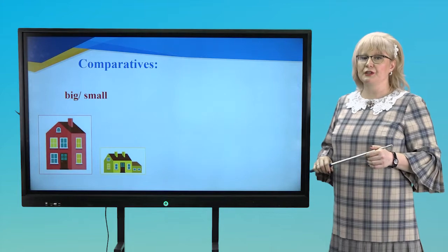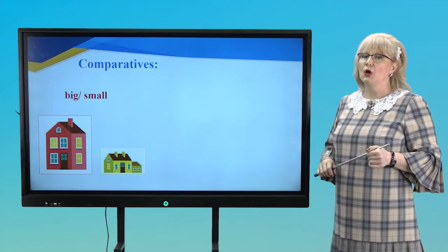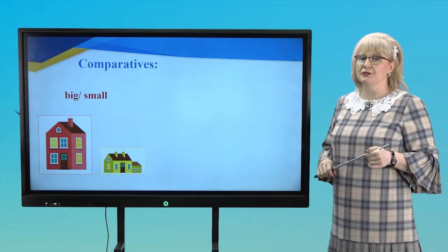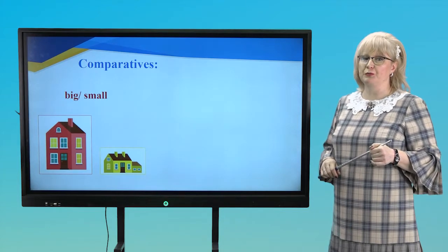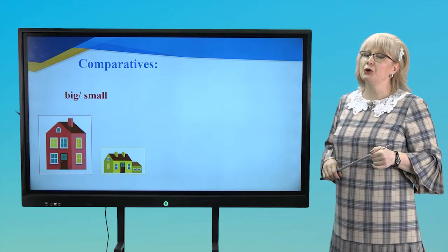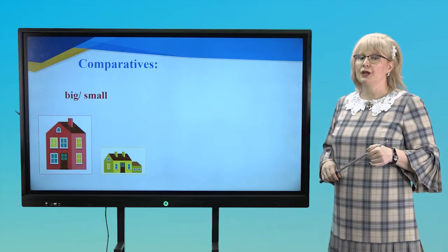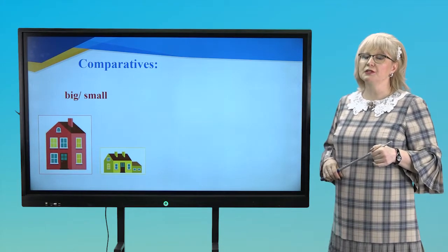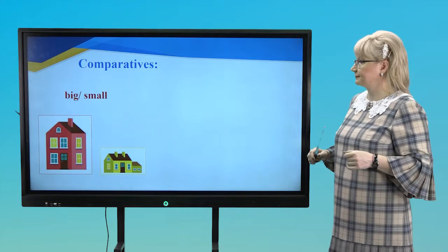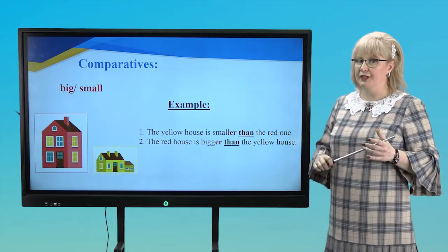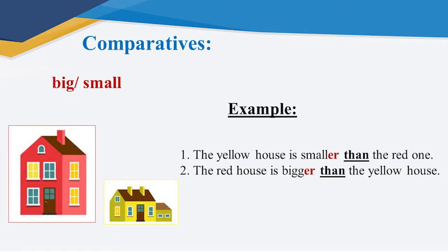And now, dear boys and girls, let's compare. We use comparative adjectives where we compare two things or people. Here you can see two houses and two adjectives, big and small. Try to do examples. Use these adjectives. Ok, ready? Let's check. The yellow house is smaller than the red one. The red house is bigger than the yellow house. Good job!